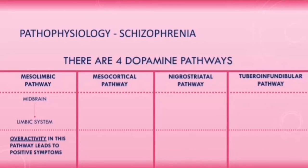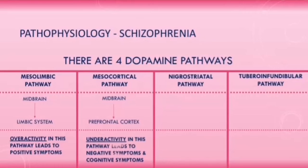The mesocortical pathway goes from the midbrain to the prefrontal cortex inside the frontal lobe. In schizophrenia, underactivity in this pathway leads to the negative and cognitive symptoms, such as flat affect, social withdrawal, and inattention.